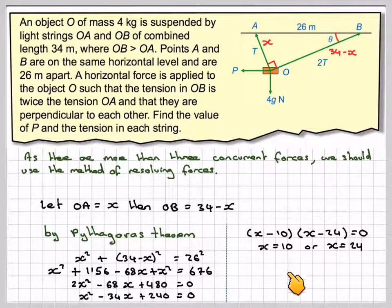Therefore x equals 10 or x equals 24. However, this one is the shorter of the 2, therefore OA is 10 metres and OB is 24 metres, as OB is greater than OA.